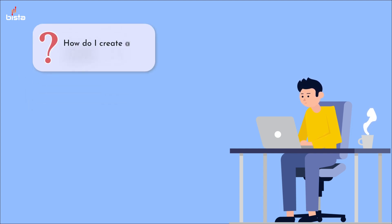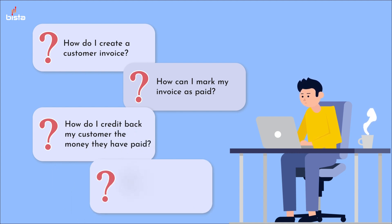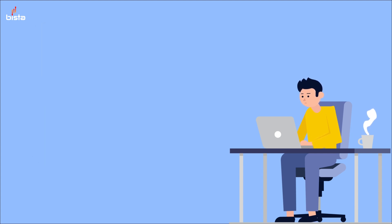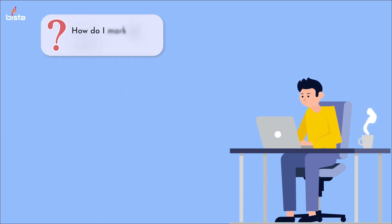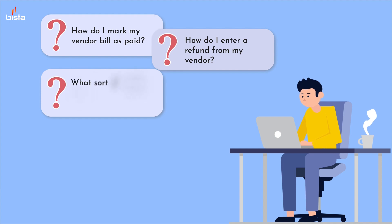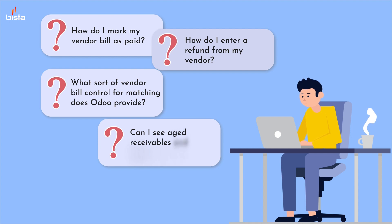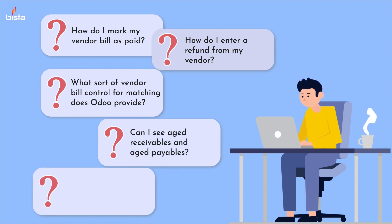How do I create a customer invoice? How can I mark my invoices paid? How do I credit back my customer the money they have paid? How do I create a vendor bill? How do I mark my vendor bill as paid? How do I enter a refund from my vendor? What sort of vendor bill control for matching does Odoo provide? Can I see aged receivables and aged payables? And does Odoo invoicing have any reporting?